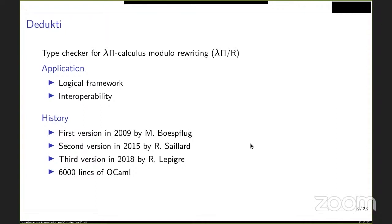DEDUCTIE is used as a logical framework in which several logics are encoded, with the goal of making those logics interoperable. One objective is to have an encyclopedia of formal proofs where one can import a proof from any proof assistant, transform it to a weaker logic, and potentially export it to another proof assistant.